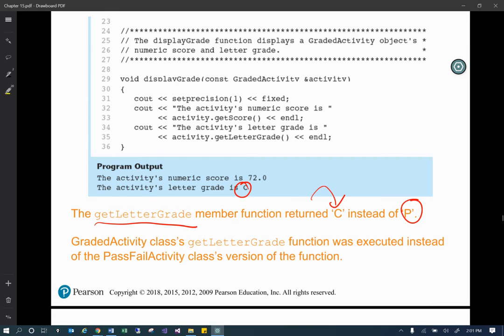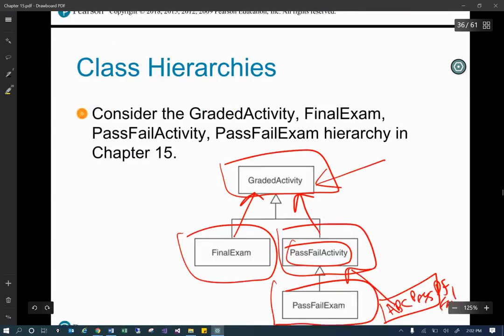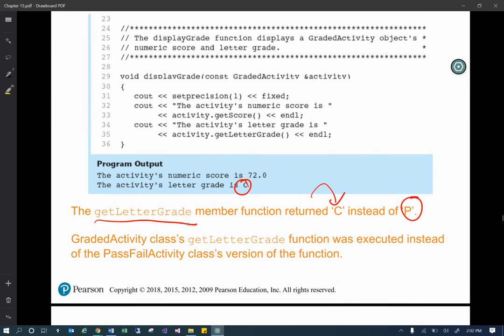I know you're going Professor Waits, you just told us that's not how it happens. So what's going on? It's the graded activity class get letter function was executed instead of the pass fail activity class's version of the function. Because they go up. I thought they had the class here. Anyways, so the get letter was called from the grade activities version and not the pass fail.